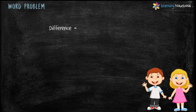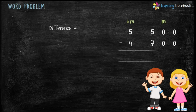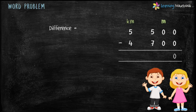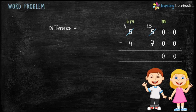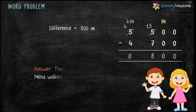Now we have to find how much more did Neha walk than John. We will subtract 4 km 700 m from 5 km 500 m. Write them in columns. Now subtract: 0 minus 0 equals 0; 0 minus 0 equals 0. Now 5 is less than 7, so it takes help from its neighbor 5 — neighbor 5 becomes 4 and 5 becomes 15. Therefore, 15 minus 7 equals 8 and 4 minus 4 equals 0. Neha walked 800 meters more than John.